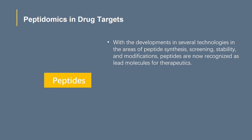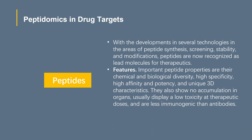In addition, they have some features that make them ideal drug targets. Important peptide properties are their chemical and biological diversity, high specificity, high affinity and potency, and unique 3D characteristics. They also show no accumulation in organs, usually display a low toxicity at therapeutic doses, and are less immunogenic than antibodies.